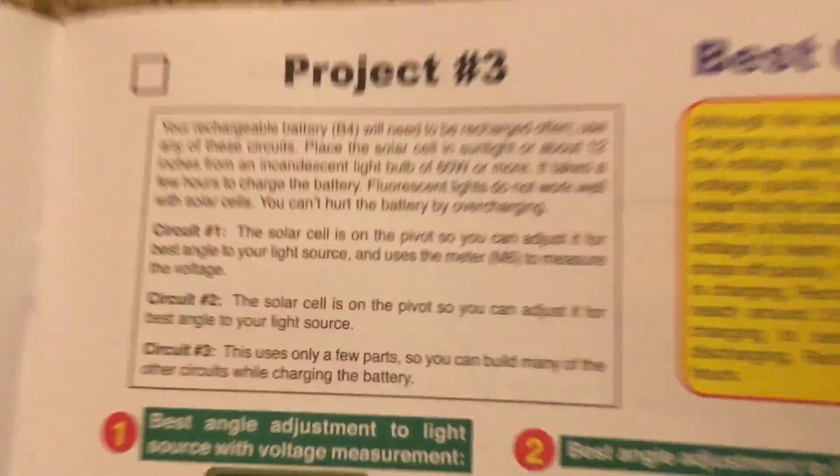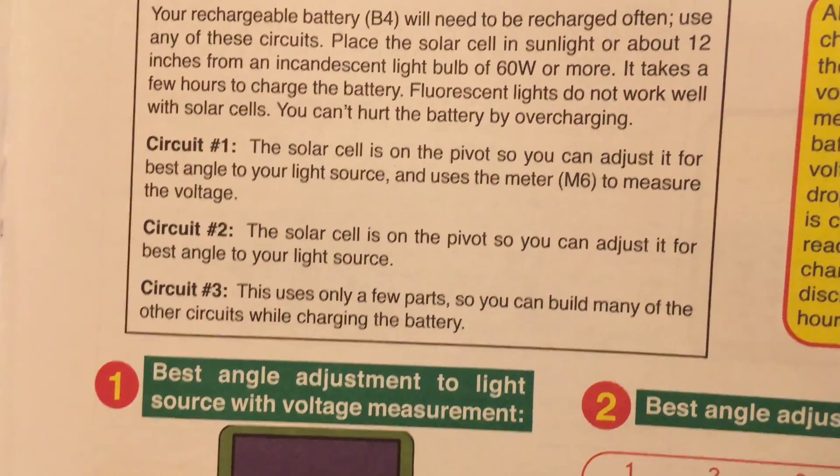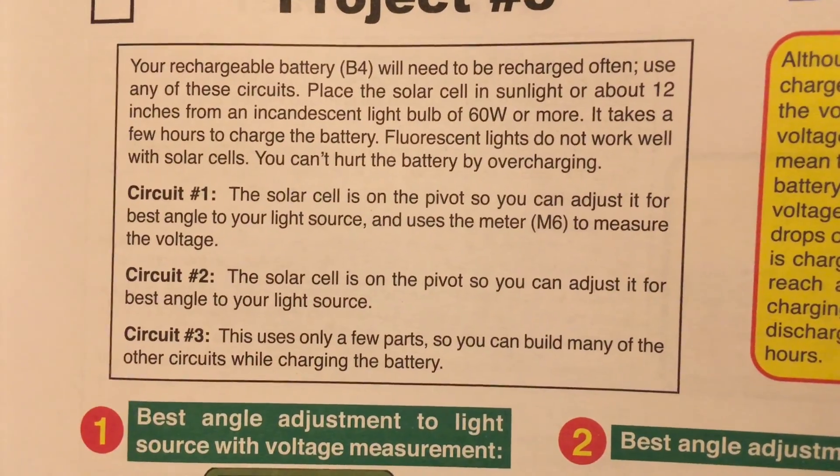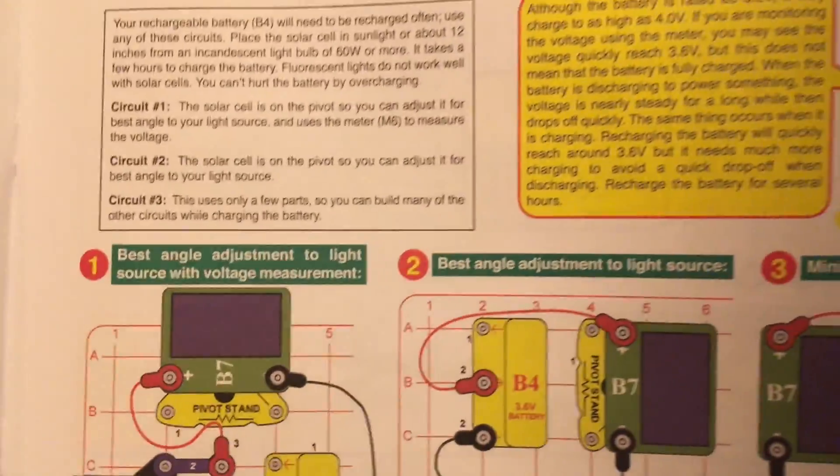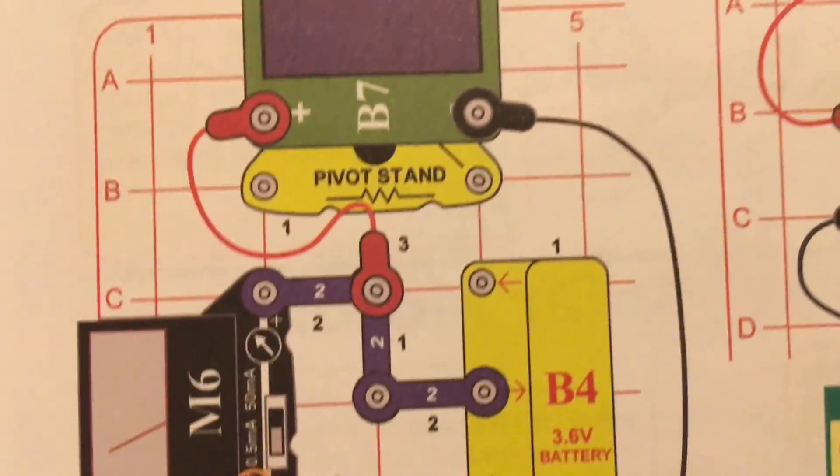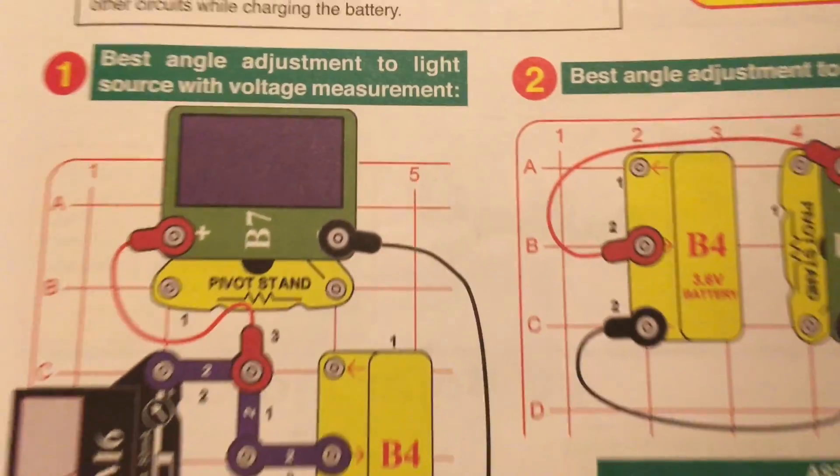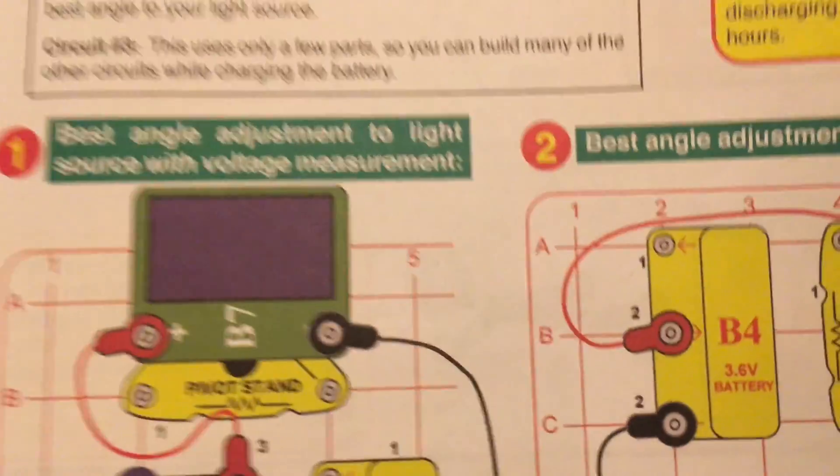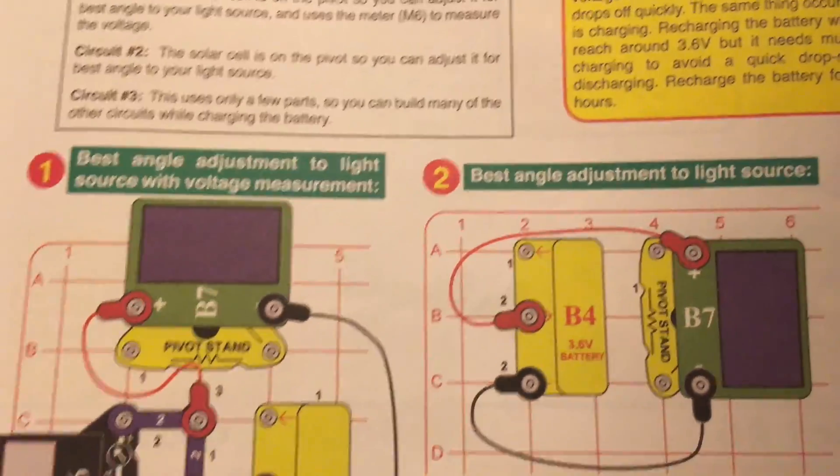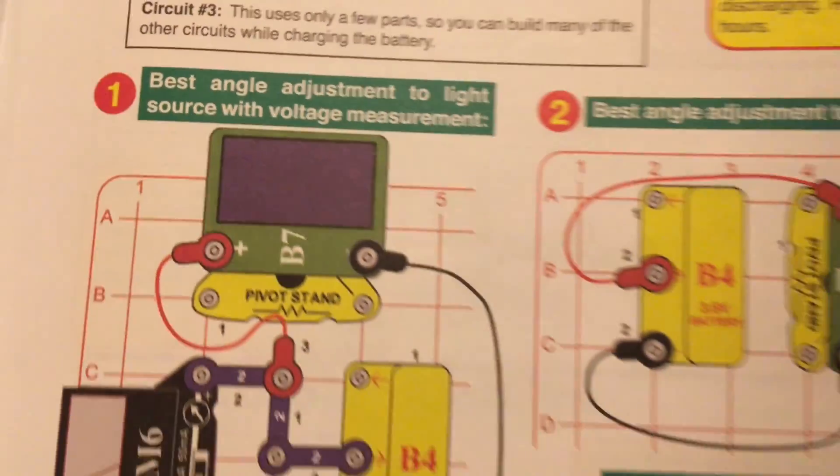Best charging circuits. This project allows you to build one of three circuits that you can use to charge the rechargeable battery in this kit. Right now I am building the most advanced one in which the pivot stand is used to mount the solar cell enabling it to be adjusted so that it is at the appropriate angle and receives the maximum amount of light to charge the battery.